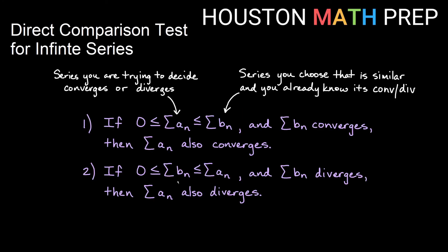Adding that as a second item to our list for the direct comparison test: if what I'm comparing to diverges and I'm bigger than that diverging series, then I must also diverge. If the b_n we choose doesn't give us the correct direction of inequality, we might need to choose a different b_n to get actual information out of the test. What may also happen is we may need to use a different kind of comparison test — that's called the limit comparison test, and that's our next video. Thanks for watching everybody, we'll see you in the next one.